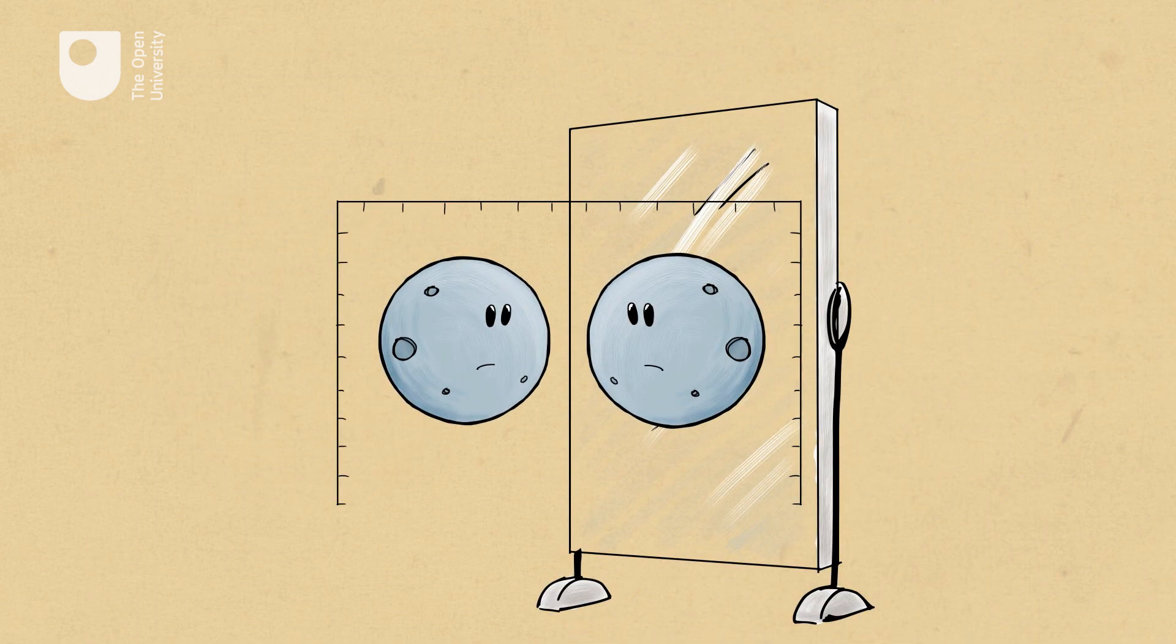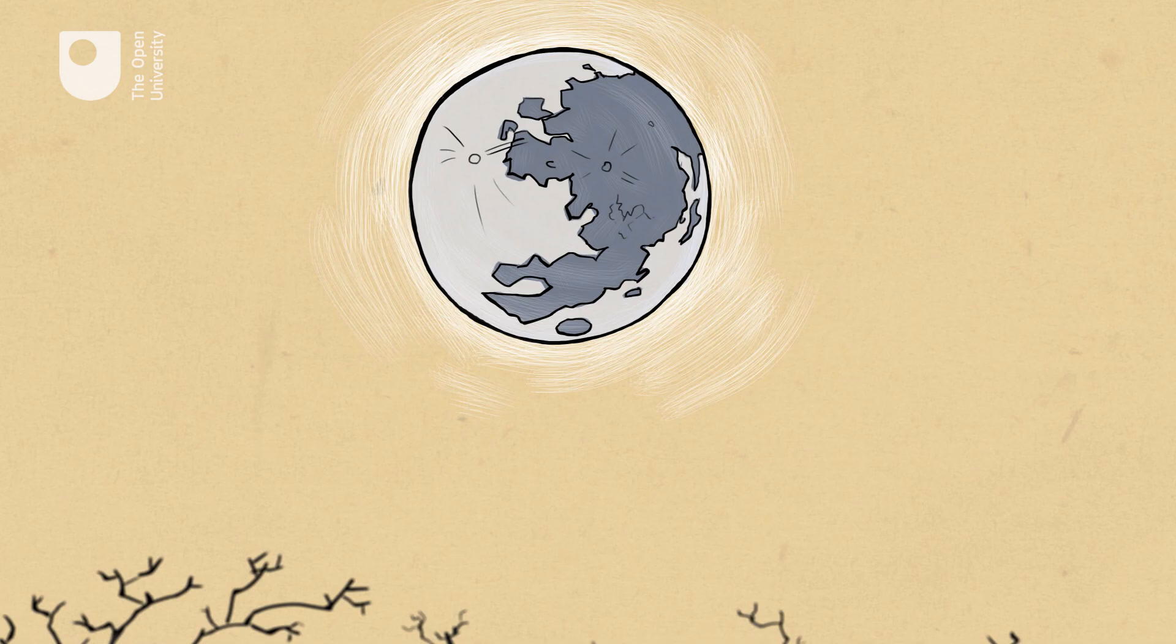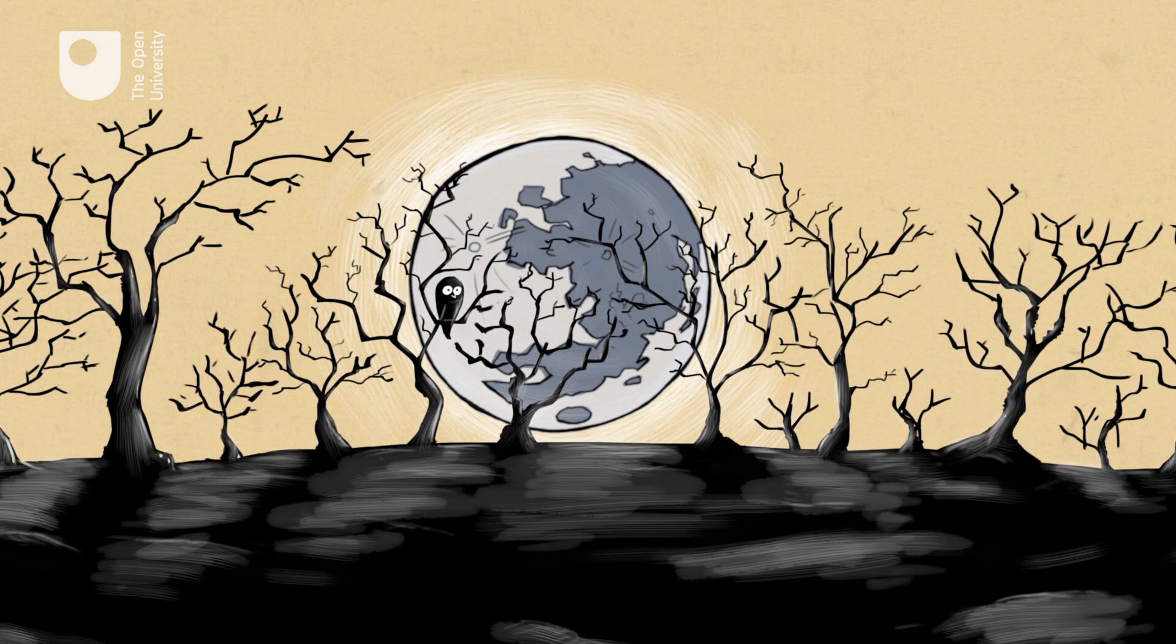This is an optical illusion known as the Moon illusion. The explanation is probably that when it is high, there is nothing nearby to relate it to, but when it is low, distant trees or buildings lend a sense of scale.